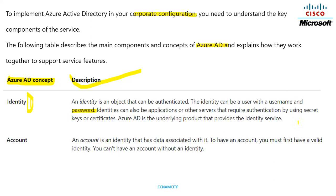For applications and servers, they will have either a key or a certificate to get authentication or authorization. Azure AD is the underlying product that provides the identity service. So to summarize: an identity is an object that has a username and password and requires authentication.